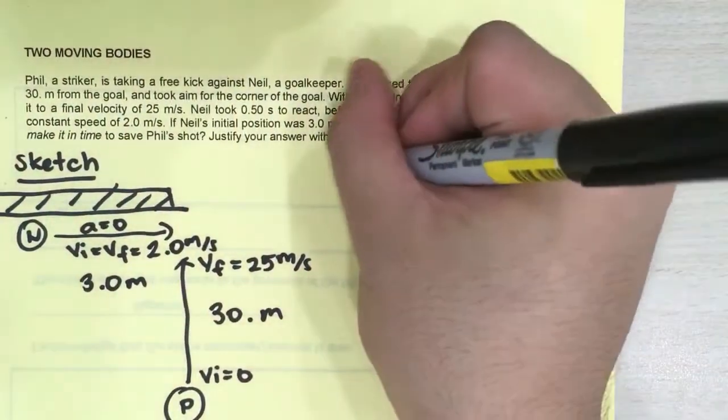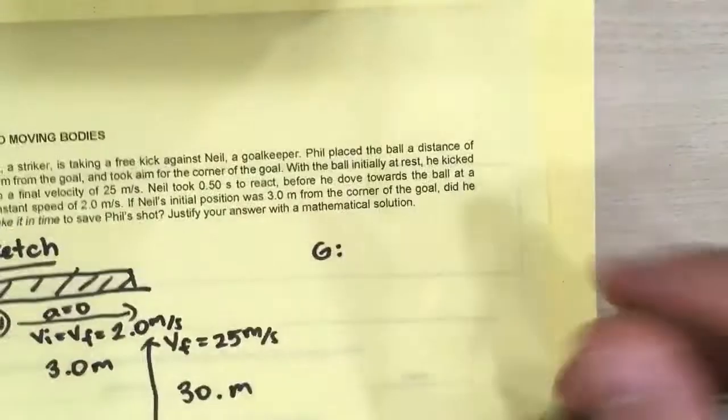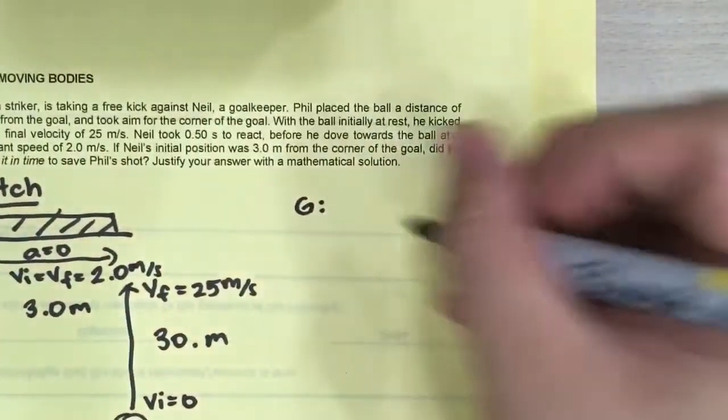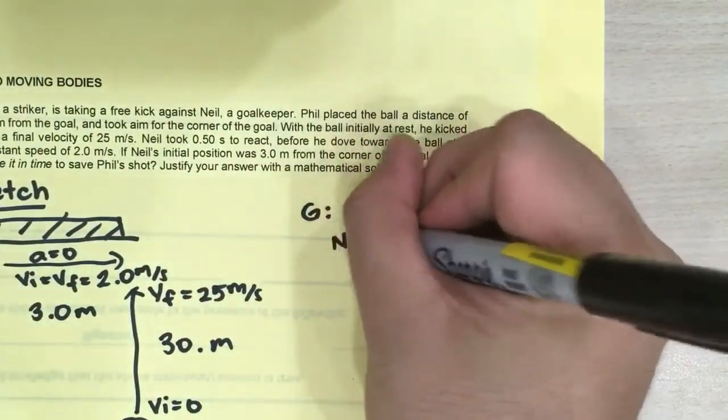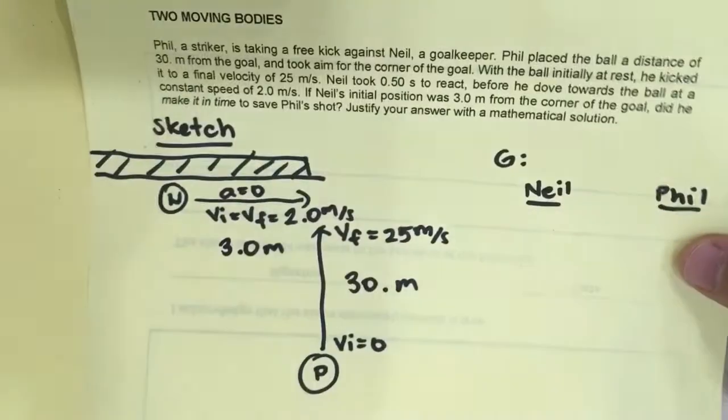So now we have to determine if did he make it in time. So what are we given here? Well, in this kind of problem where there are two bodies, it is very useful to separate it by the two bodies involved. So we have Neil and Phil.